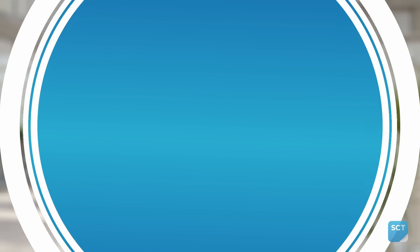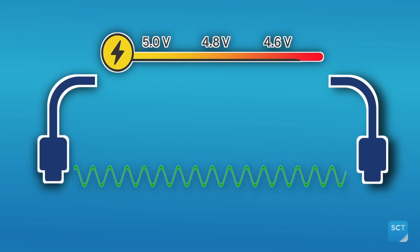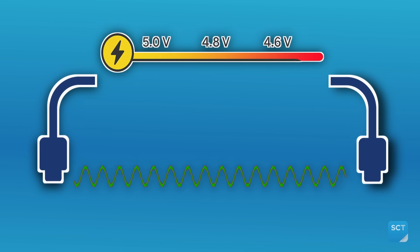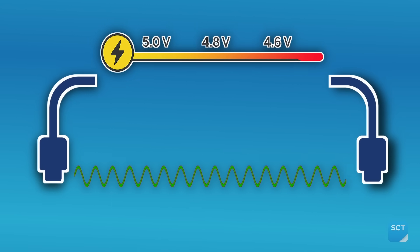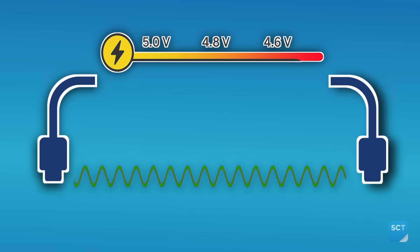Of course, it's not just about data. Let's shift to power delivery, or PD. Voltage drops over distance, so longer cables can't always provide the power a device needs. That can cause disconnects, brownouts, or even damage over time.